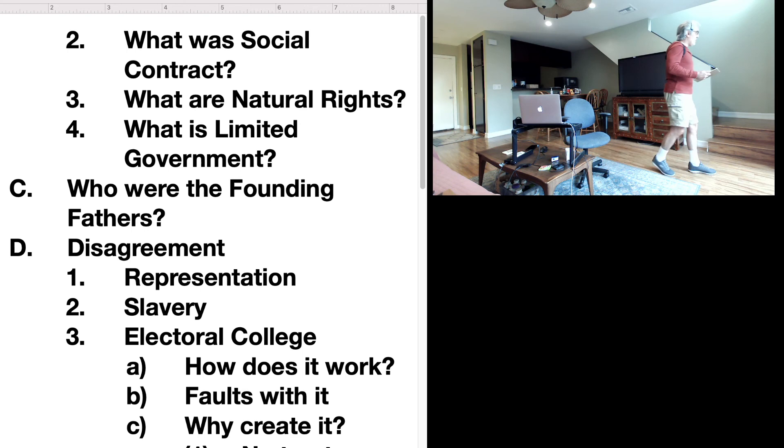Now, given that the Articles of Confederation said you have to have all 13 states present, what should the founding fathers have done? Well, they should have either postponed the convention or went out to Rhode Island and said, 'Why don't you come?' - entice them to come this way they can do things the legal way. But no, they didn't care. They pressed forward.